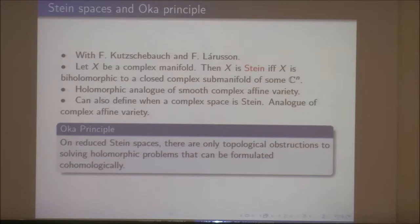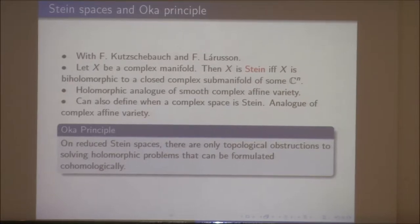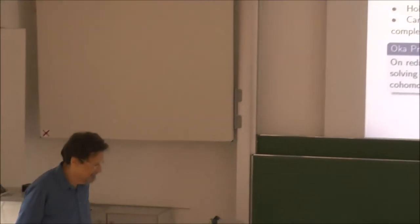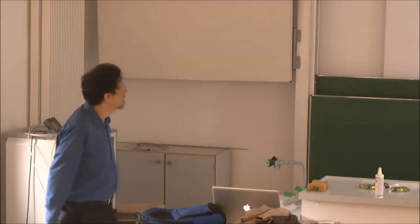The Oka principle has been around for a long time. People like to sum it up in the following way: on a reduced Stein space — which means there aren't any nilpotents in the structure sheaf — there are only topological obstructions to solving a holomorphic problem that can be formulated in terms of cohomology. It says that to do something in the holomorphic domain is only obstructed by topology. That's a very powerful fact.